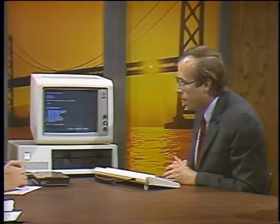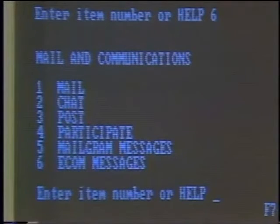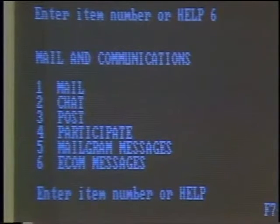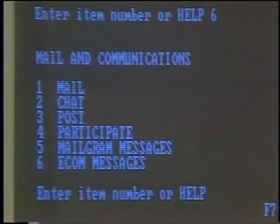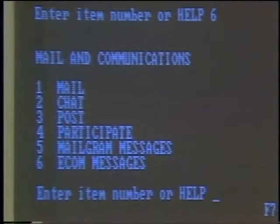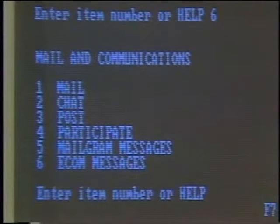We're going to go into item number six, which is mail and communications, and it takes us down one more level of menu. From here we have options of electronic mail, which is item number one; chat, which is interactive — we can talk to another user who is online presently; our post system, which is a bulletin board where users can post messages about different topics to other users and get replies; participate, which is a conferencing system; and Mailgram and e-com messages, which send messages out to non-Source users through either the Mailgram system or the U.S. Mail's e-com system.